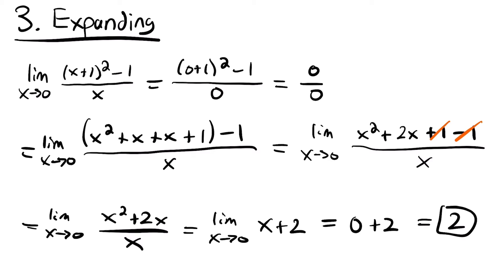A quick note: every time we rewrote our limit, the limit notation stayed with the function — it never disappeared until we plugged in the value of x. That's very important when showing your work. Always carry over that limit notation until you are able to plug in.